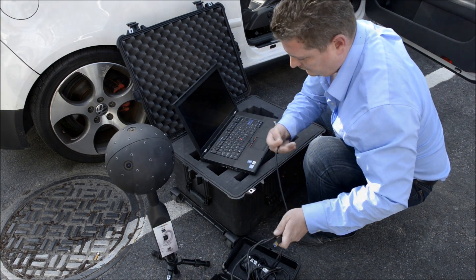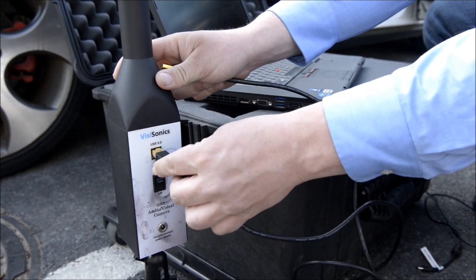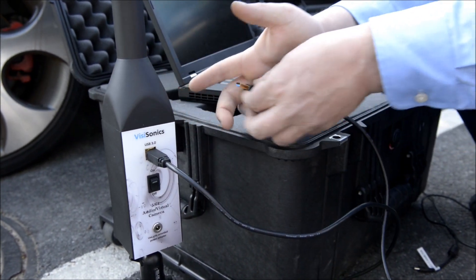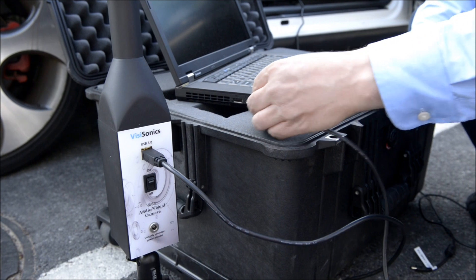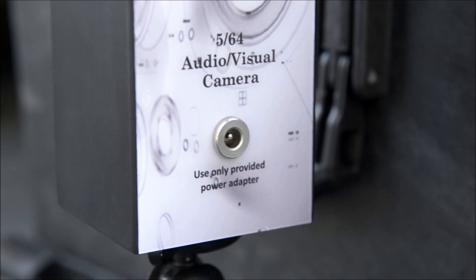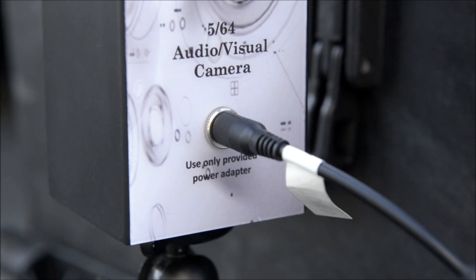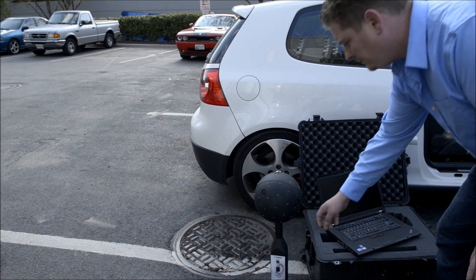First step is to connect the USB B cable to the audio camera in its single port. Then connect the A connector to the computer. Next we connect the audio camera's power supply. At this point we're ready to take data but let's first set up the audio camera inside the car.